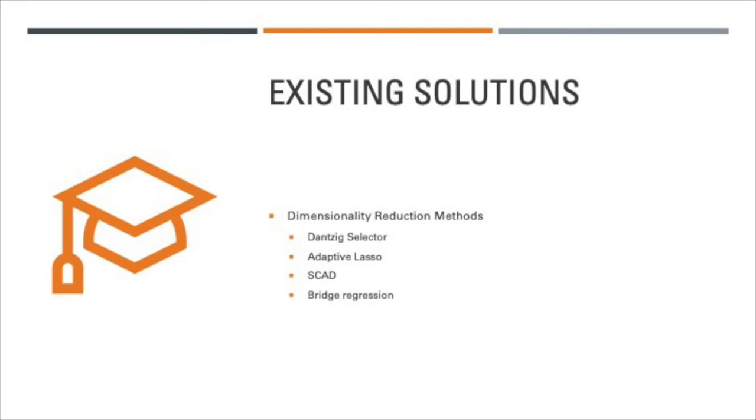A concept that we want to address is known as the oracle property, which knows the true subset of predictors in the model and also estimates parameters efficiently. However, with the existing methods of dimension reduction, they are very poor at predicting the oracle with a sparse dataset when p is significantly greater than n, which leads us to our main topic of Sure Independent Screening.